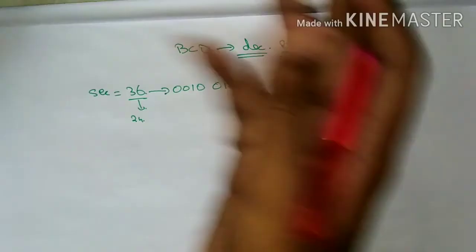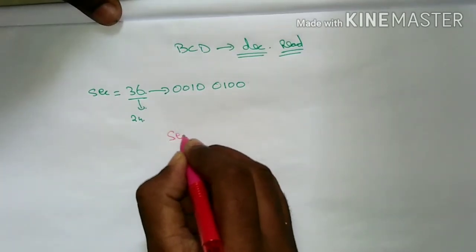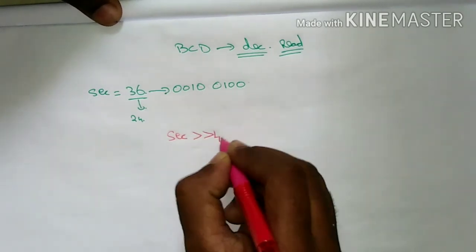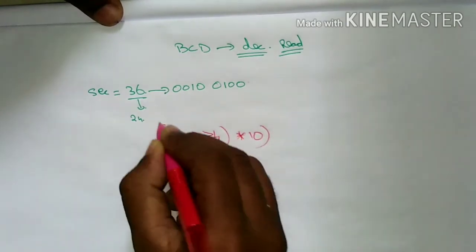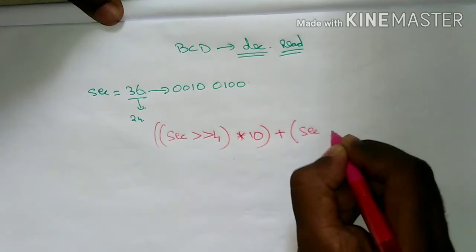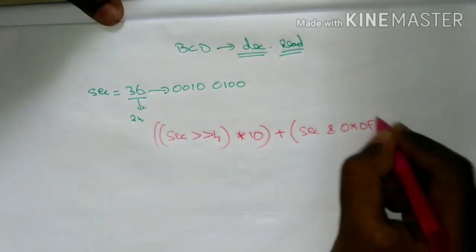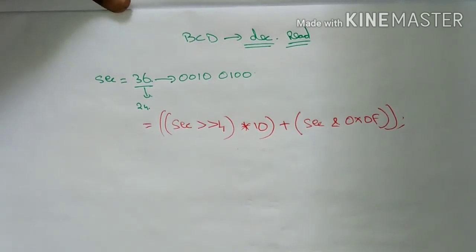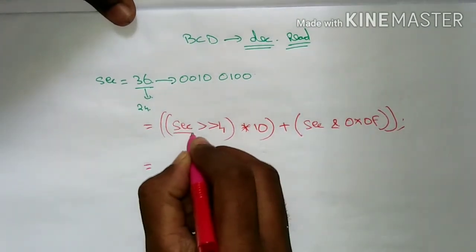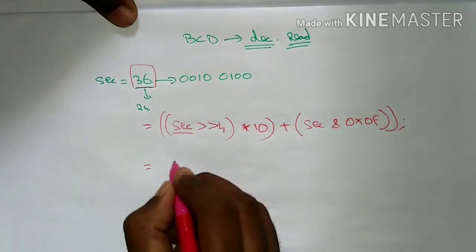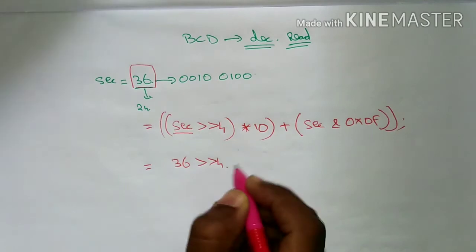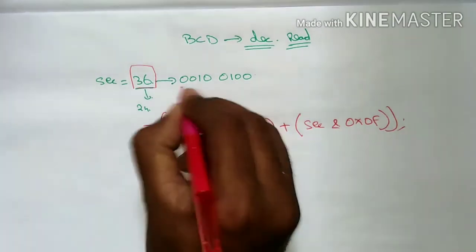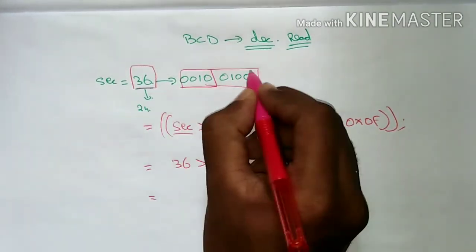If you do this, we need to look like this: sec, left shift — right shift 4 times. Reverse formula: this goes into 10, plus sec AND 0x0F. This is the formula — right — this is read from RTC. That is our program. Full value, 4 times shift.